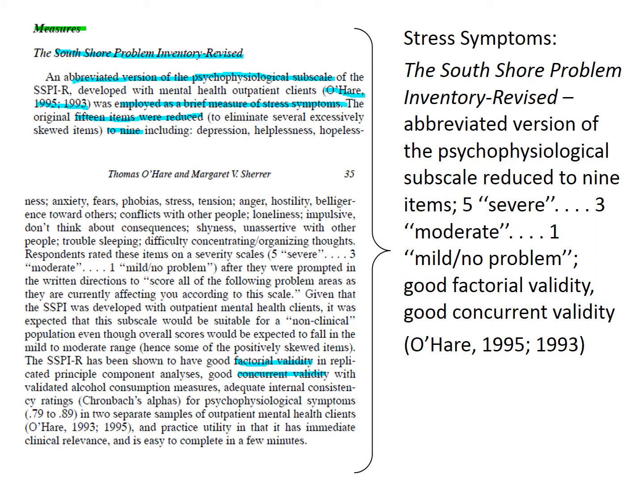The operational definition of gender is typically self-report, so we won't need to look for that, but we will skim the methods section for information on the other variables. The Measures heading on page 34 of the article helps signal that we might be in the right place, and the first paragraph confirms we are. We can use the information highlighted in this slide to summarize the operational definition for stress. Your notes on the article summary template should include at least the information included in the example here.